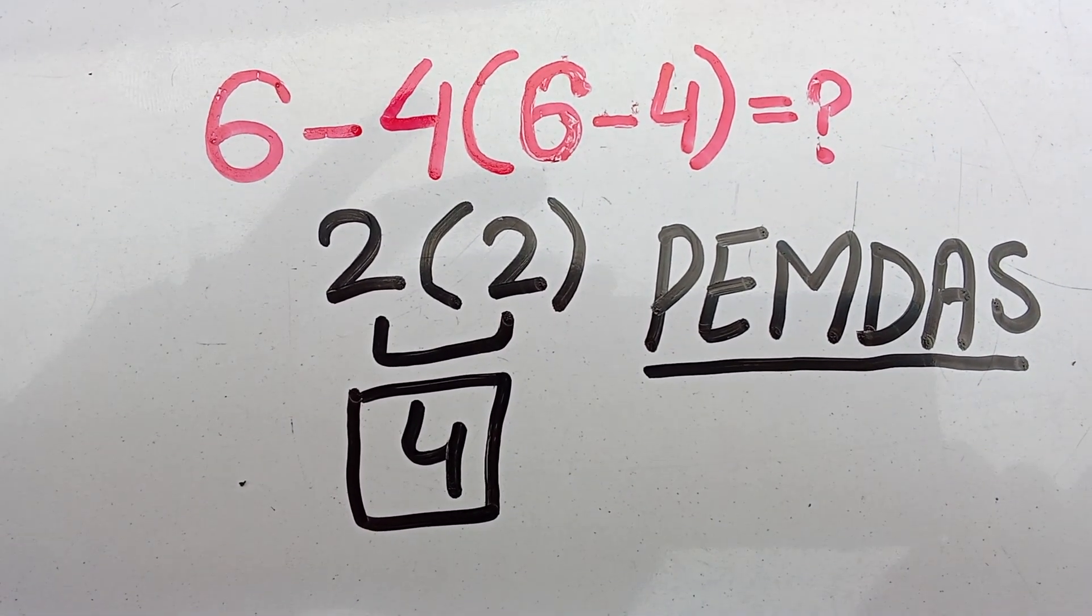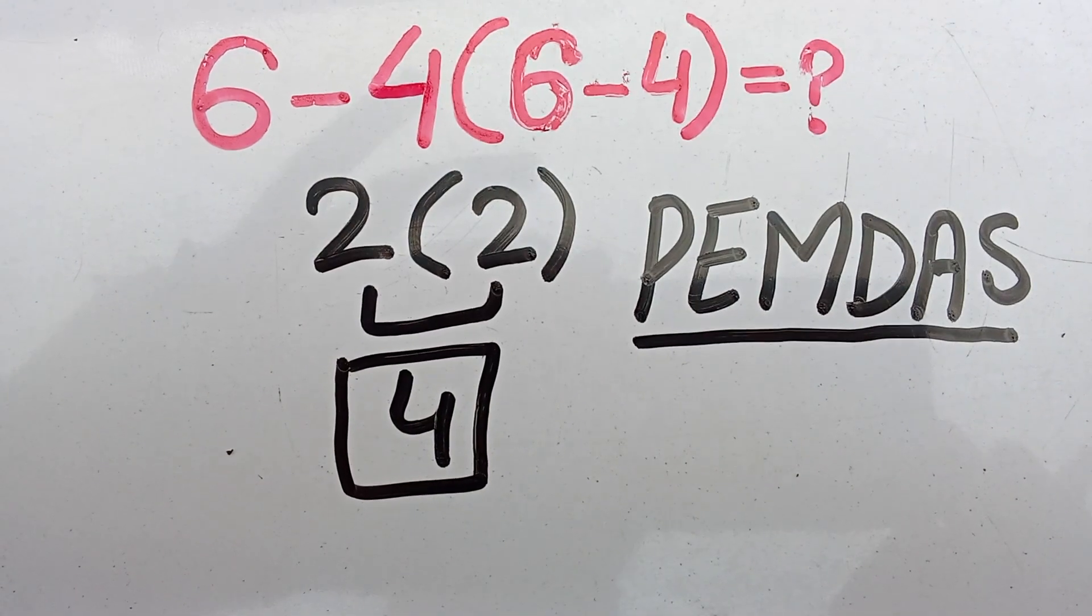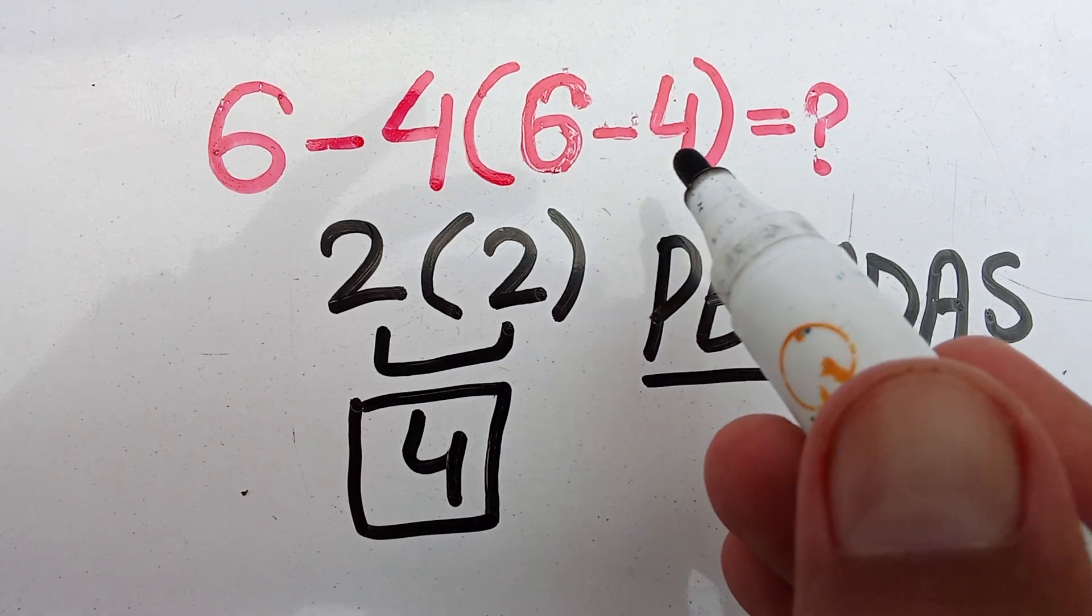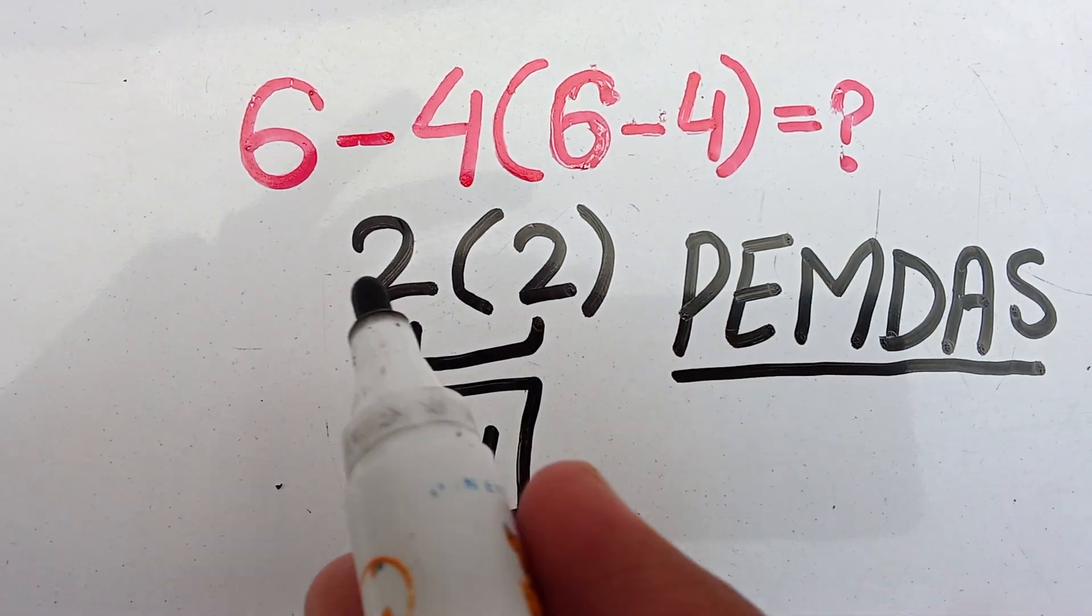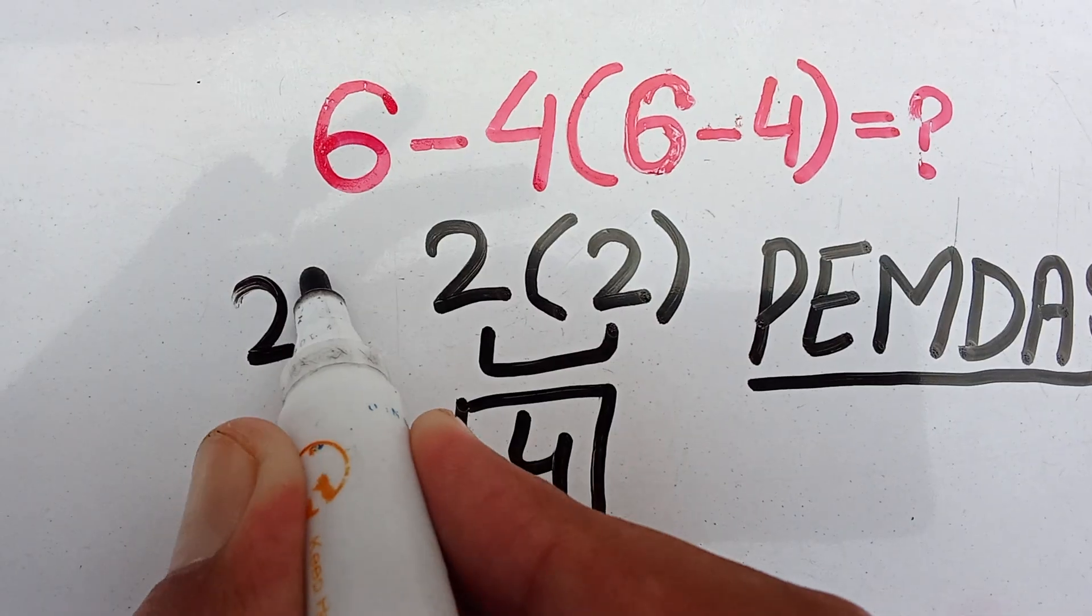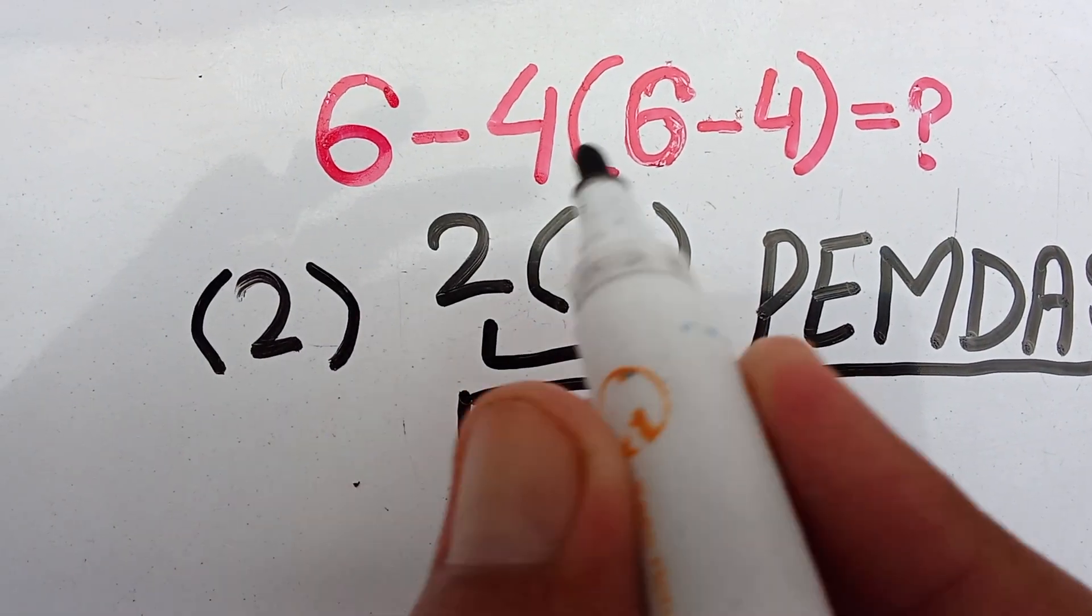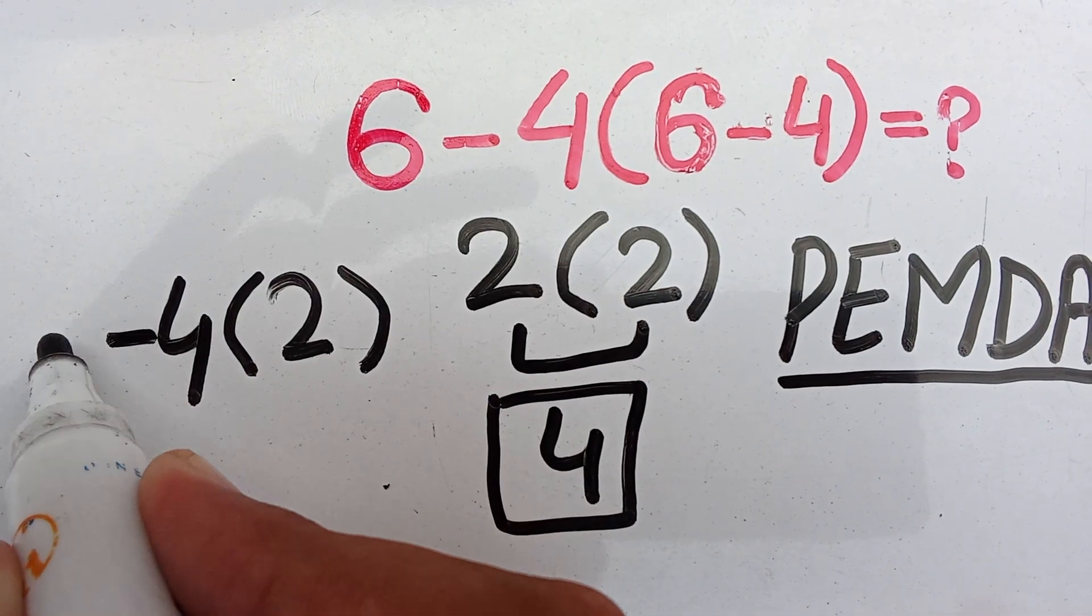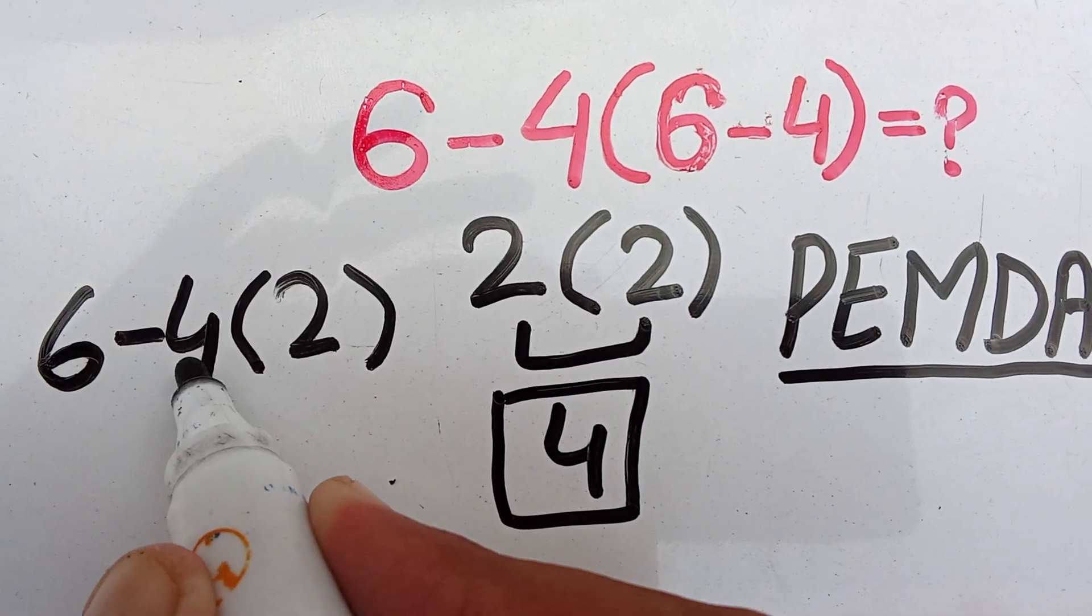So firstly here I can solve parenthesis. So 6 minus 4 which is equal to 2. I can write here 6 minus 4 times 2.